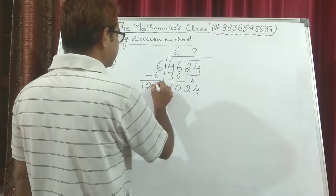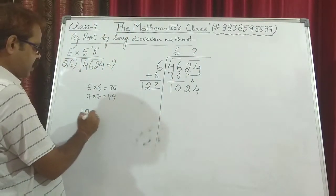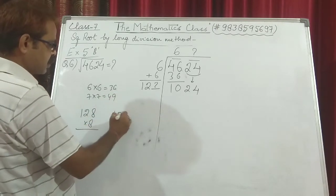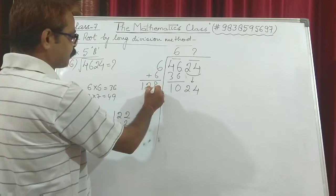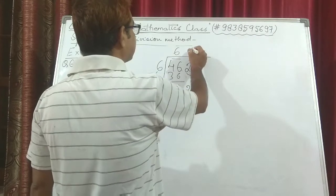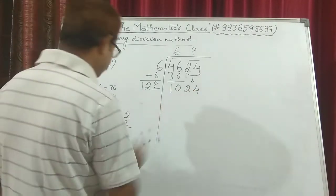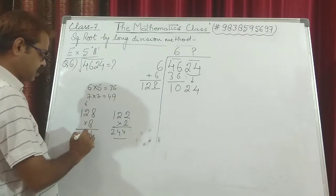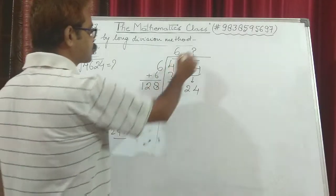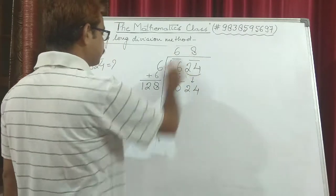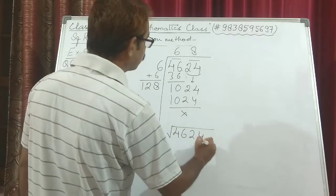We need a number so that 12-something times that same something gives 1024. We know 8 into 8 is 64, so it could be 128 into 8. We also know 2 into 2 is 4, so it could be 122 into 2. Let's check by 8: 8 times 8 is 64, carry 6, then 8 times 2 is 16 plus 6 — we can confirm 128 times 8 equals 1024. Nothing is left, so under root 4624 is equal to 68.